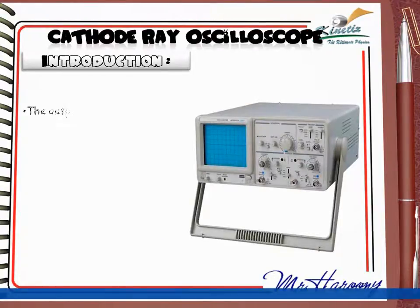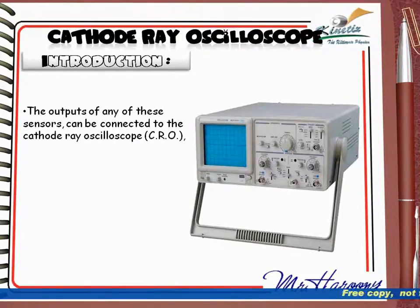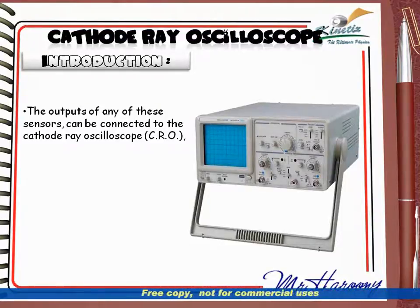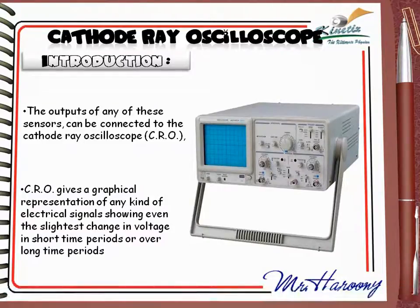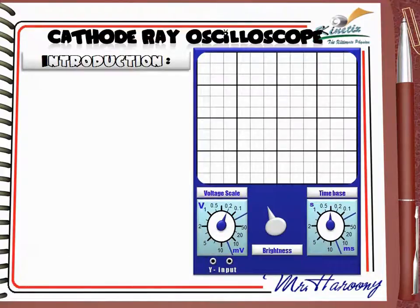الجهاز ده هو الـ Cathode Ray Oscilloscope. الـ outputs لأي من هذه الـ sensors يمكن توصيلها بالـ CRO. جهاز الـ Cathode Ray Oscilloscope بيرسم graph لتغير الفولتج مع الـ Time، ويرسم التغيرات الكبيرة والبسيطة والسريعة جداً للفولتج مع الـ Time.